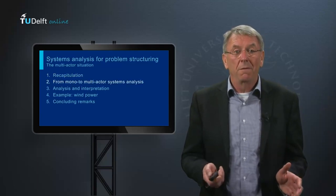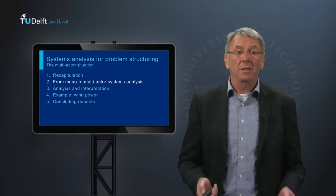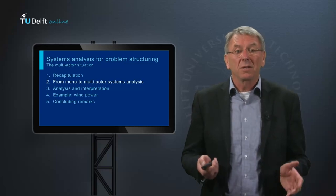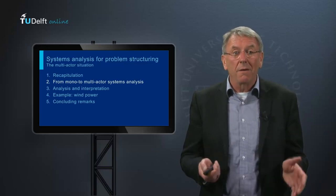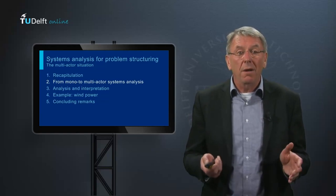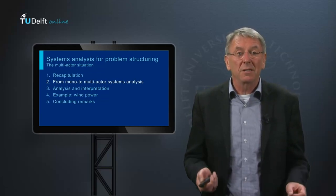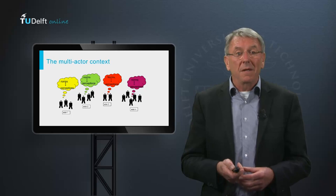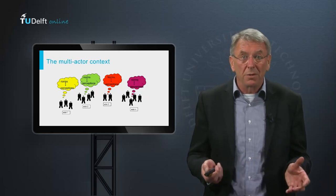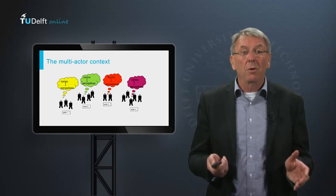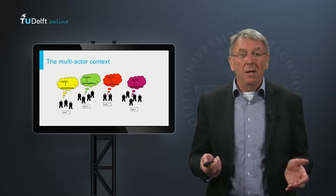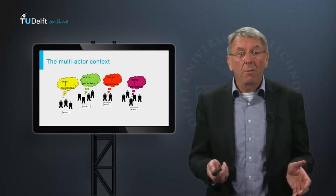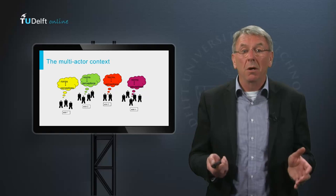But when multiple actors are involved, limiting your analysis to the mono-actor perspective is insufficient. Some actors might be affected by actions considered by the problem owner and therefore oppose his or her plans. Other actors possess means that are necessary for reaching the problem owner's goals. And these other actors may have entirely different goals and problem perceptions. You will need to explore their perceptions, determine their interests, and find out whether they may help the problem owner reach his goals or not, and why.